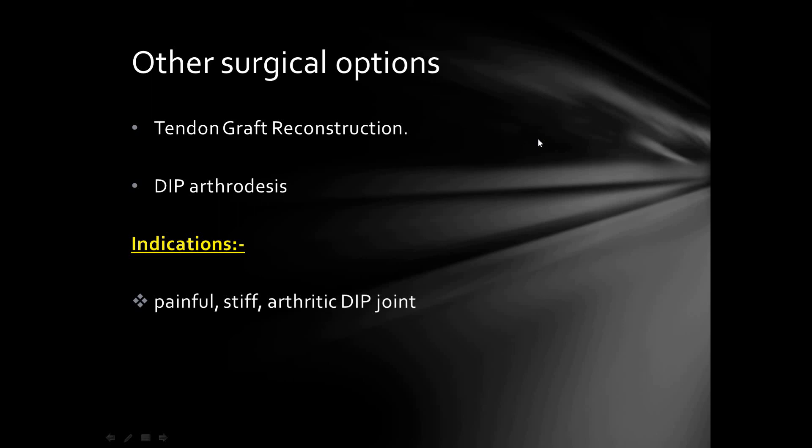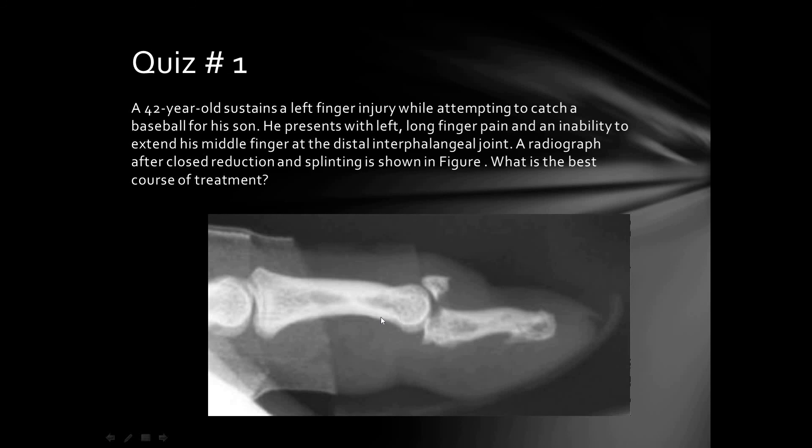Other surgical options for chronic mallet finger include tendon graft reconstruction and distal interphalangeal joint arthrodesis. Arthrodesis is indicated for a painful, stiff, arthritic distal interphalangeal joint.